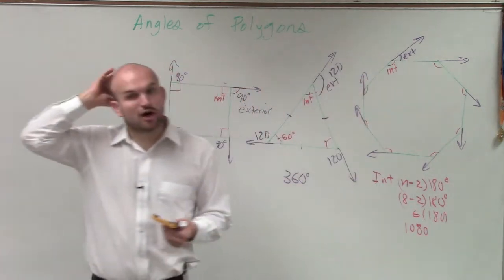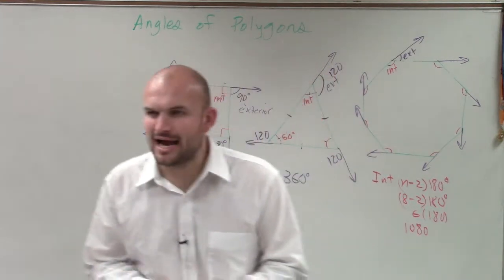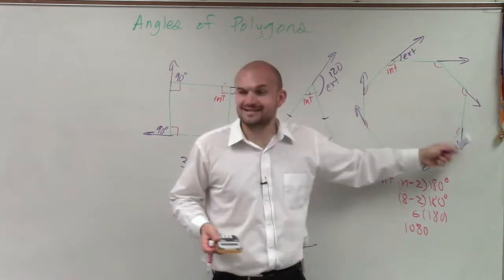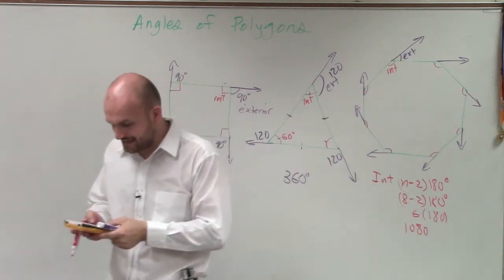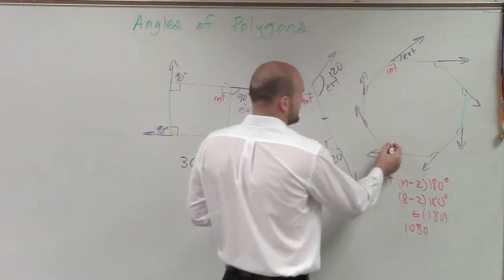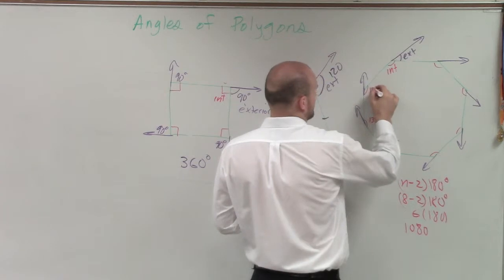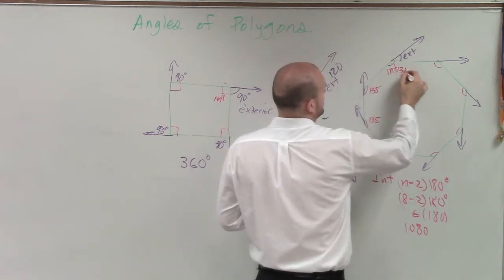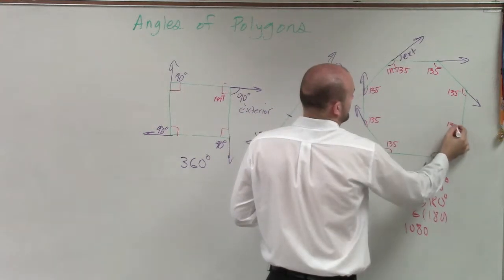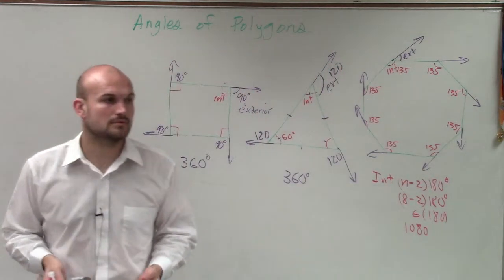That means the measure of all of my angles is 1,080. But how many angles do I have? 1, 2, 3, 4, 5, 6, 7, 8. So I'm going to divide that by 8, and I get 135. That means each one of these angles is 135.